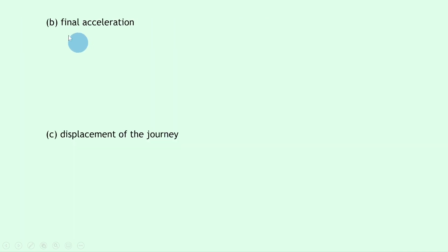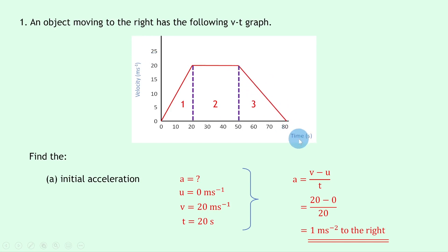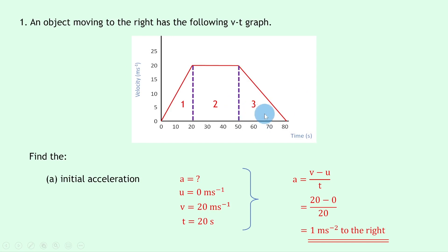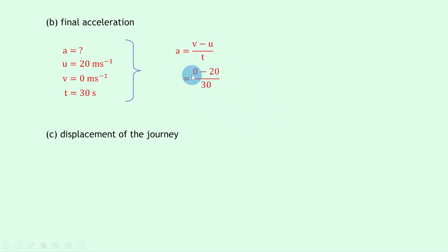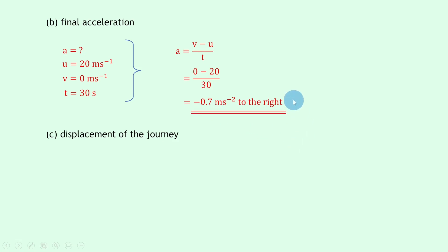Part B says to find the final acceleration. Looking at the graph, we're now interested in the deceleration section, so we expect a negative value. The initial velocity u is 20 m/s, the final velocity v is 0 m/s, and this happens from 50 to 80 seconds — a time of 30 seconds. So a = (0 − 20) / 30 = −0.7 m/s² to the right.